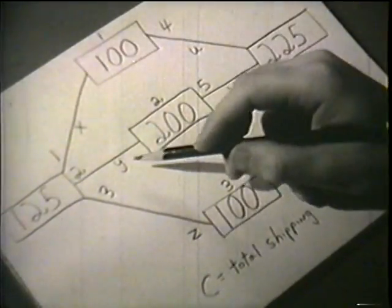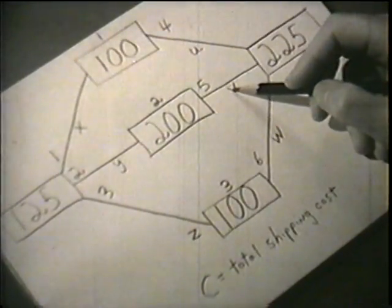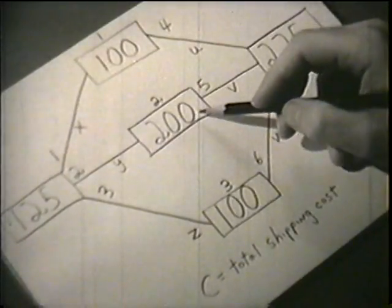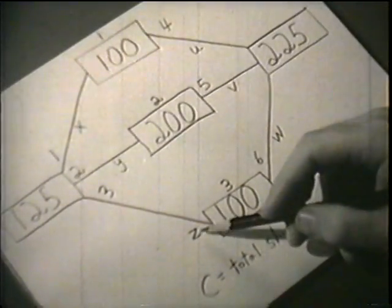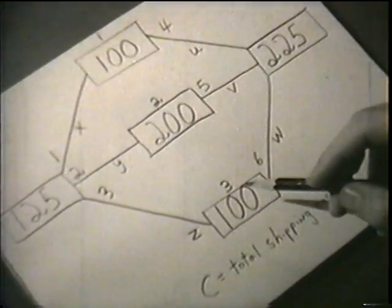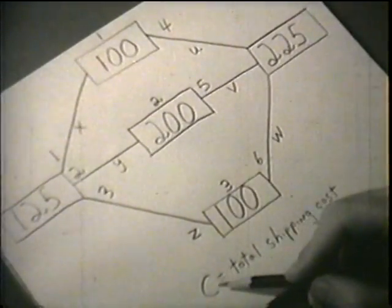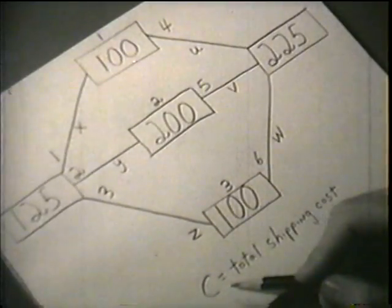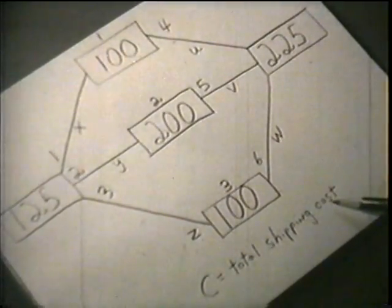For the same reason, Y plus V must be less than or equal to 200. And Z plus W must be less than or equal to 100. Now, if we call the total shipping cost C, then C equals the sum of the cost for each of the shipments.